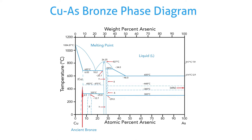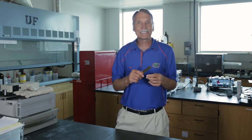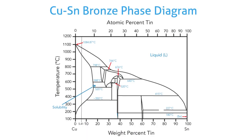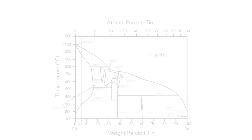As you add arsenic to copper, the melting point goes down — which was very important because it meant bronze could be melted at a lower temperature, making it more accessible. The same thing happens when you add tin. The blue line on the tin diagram indicates solubility — how much tin you can dissolve into copper — and it turns out you can dissolve a lot more tin into copper than arsenic, which was a real advantage of tin.